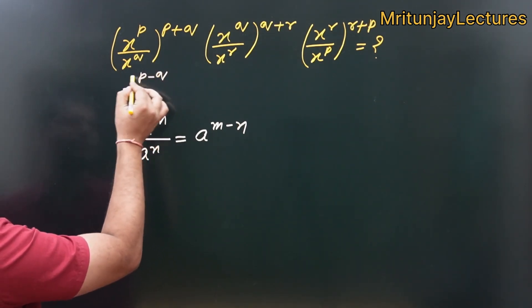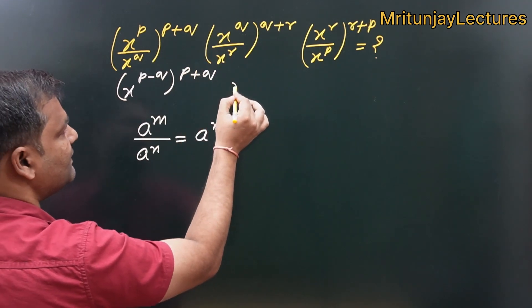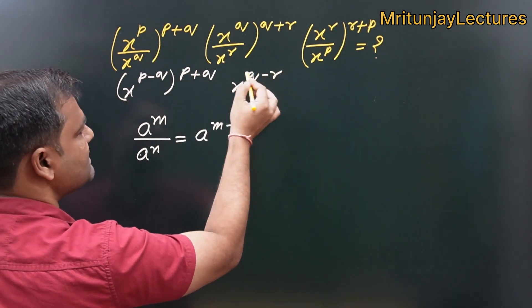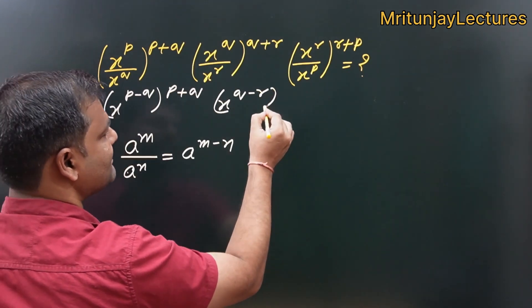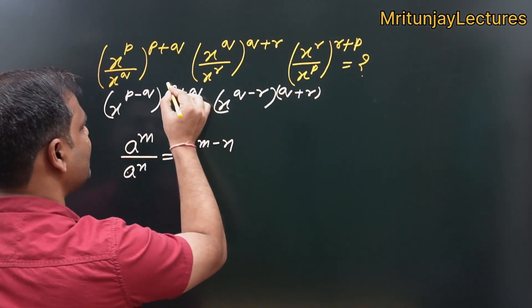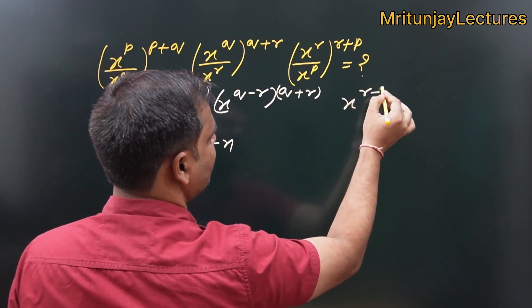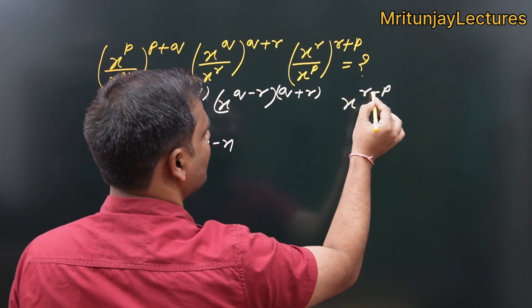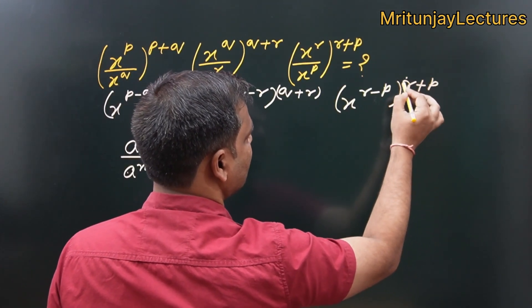Simply p minus q to whole power p plus q. That one written x to power q minus r to whole power q plus r. Into x to power r minus p to whole power r plus p.